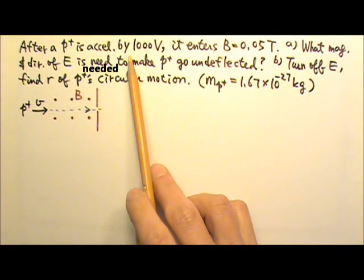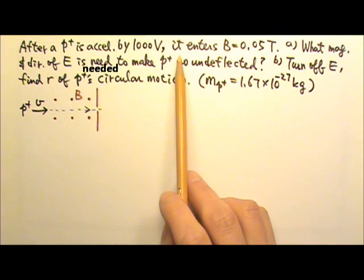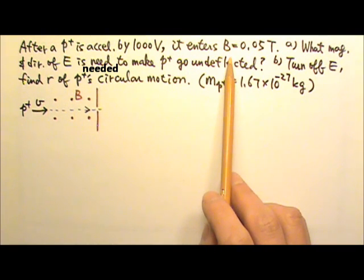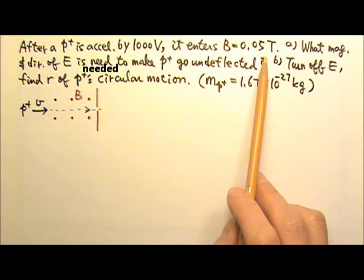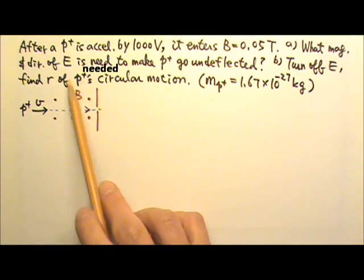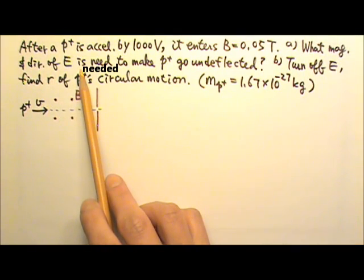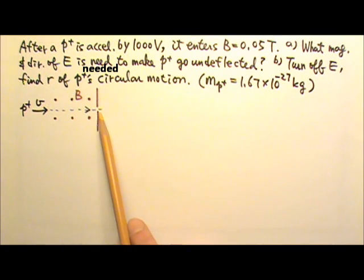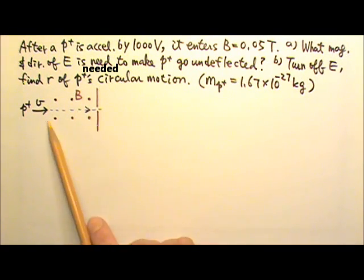After a beam of protons is accelerated by 1,000 volts, it enters a region with a uniform magnetic field of 0.05 teslas. Part A: What magnitude and direction of electric field is needed to make this proton beam go straight and undeflected through this region?